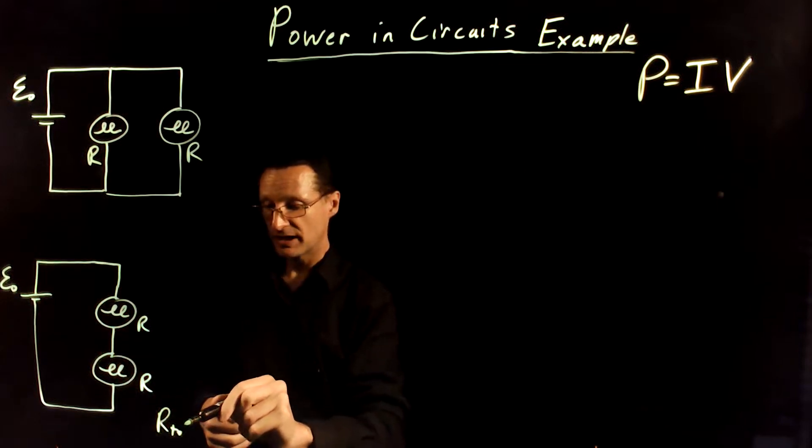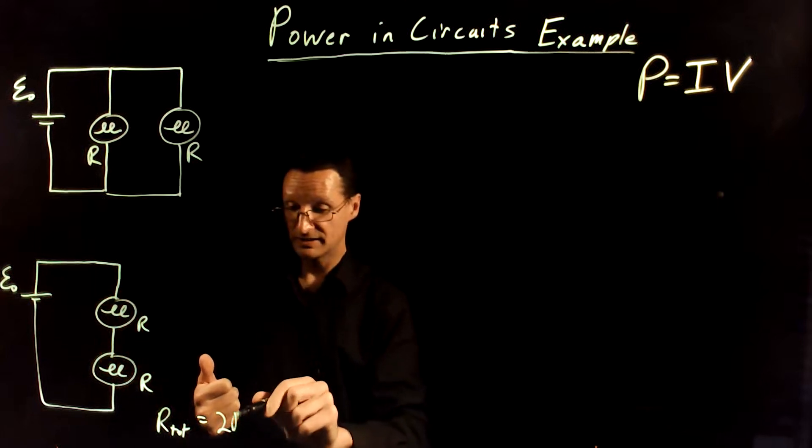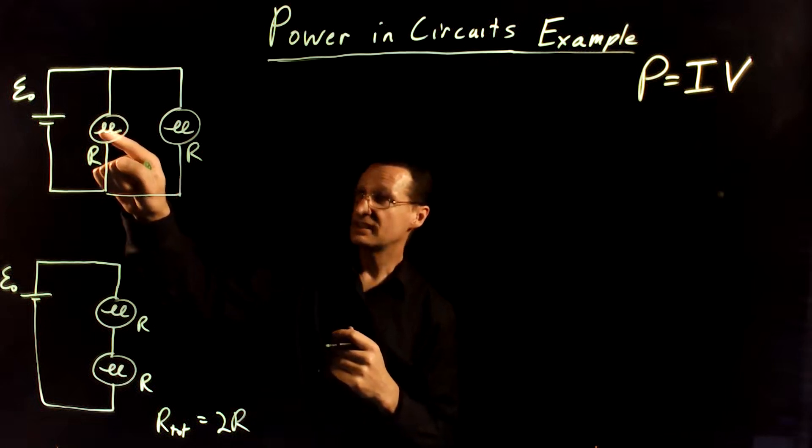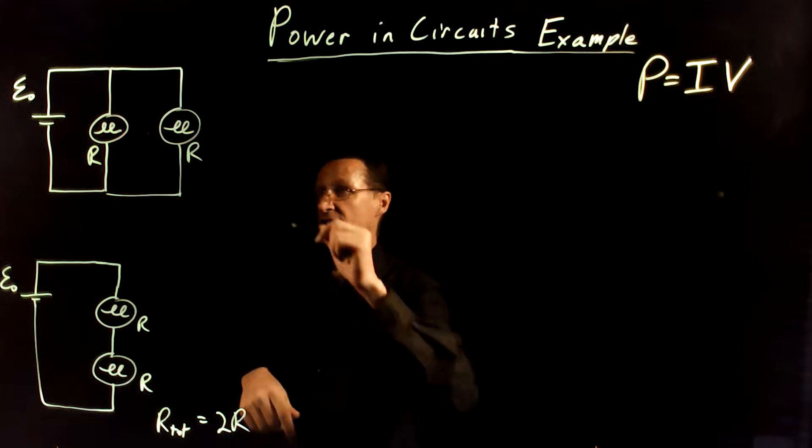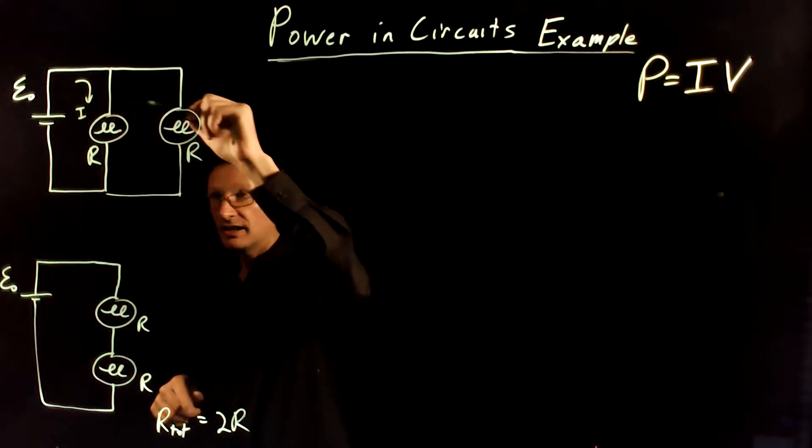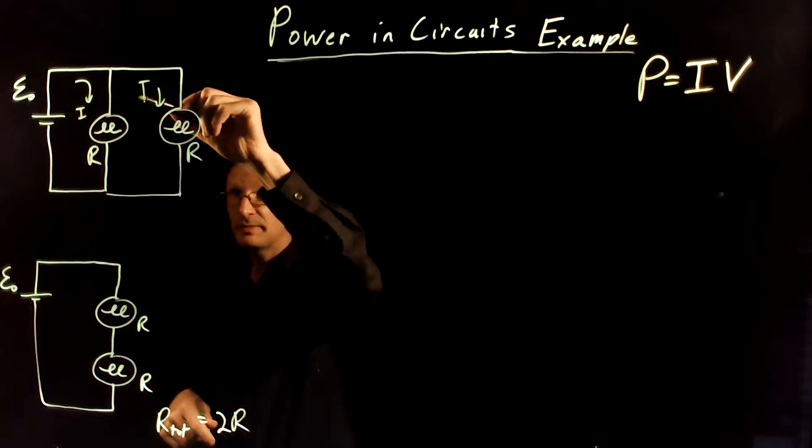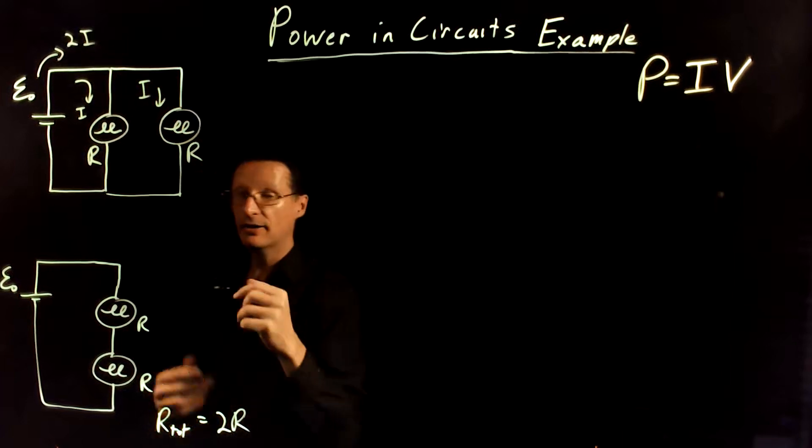the total resistance of this circuit is going to be 2R because these two are in series with each other. That's twice as much as each of these individually. On the other hand, if we think, we imagine that there's a current I that's passing through this resistor and current I that's passing through this resistor, that would mean that 2I is coming out of the battery.